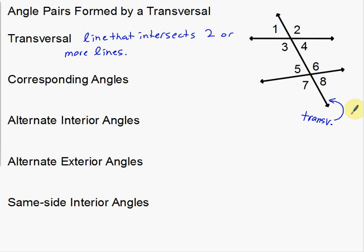We're going to look at how all eight of these angles relate to one another. We have these four vocabulary words to go over: corresponding angles, alternate interior angles, alternate exterior angles, and same side interior angles. Now these last three are kind of self-explanatory, but this first one is not so much.